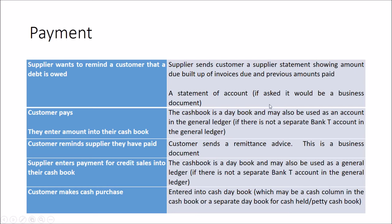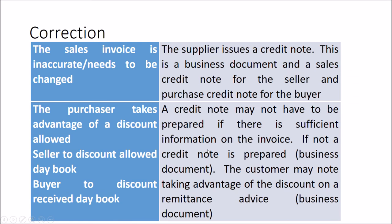The supplier enters the payment for credit sales into their cash book. Now, if the sales invoice is inaccurate or needs to be changed, the supplier issues a credit note. Just like the sales invoice, the supplier issues both: a sales credit note for the seller and a purchase credit note for the buyer. This goes into the sales returns day book for the seller — a book of prime entry — and the purchase returns day book for the buyer.